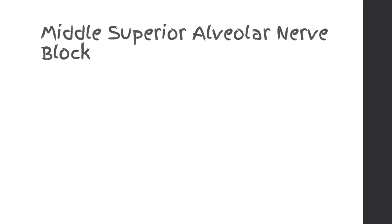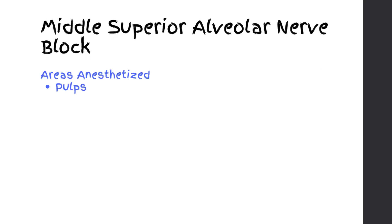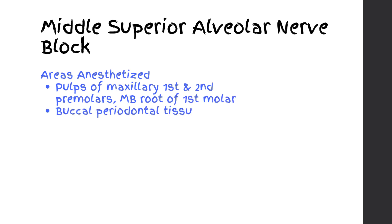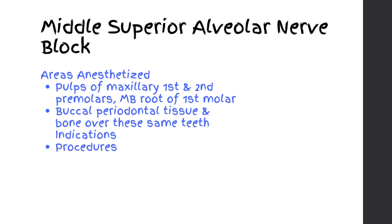Middle Superior Alveolar Nerve Block. Areas anesthetized: pulps of maxillary first and second premolars; mesiobuccal root of first molar; buccal periodontal tissue and bone over these same teeth.